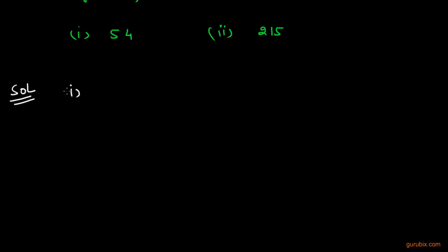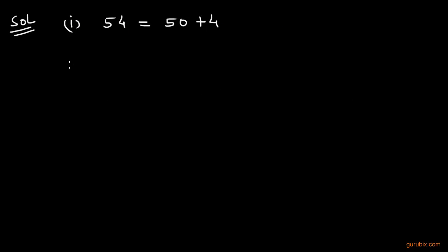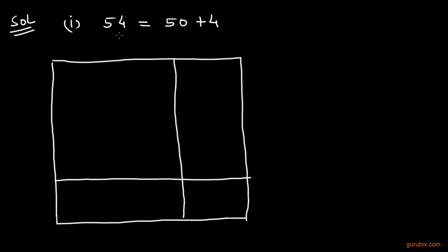First of all we shall start with part 1. Part 1 is 54, and we shall write 54 as 50 plus 4. Now we shall prepare our table and write 50 here and here, and 4 here and here.